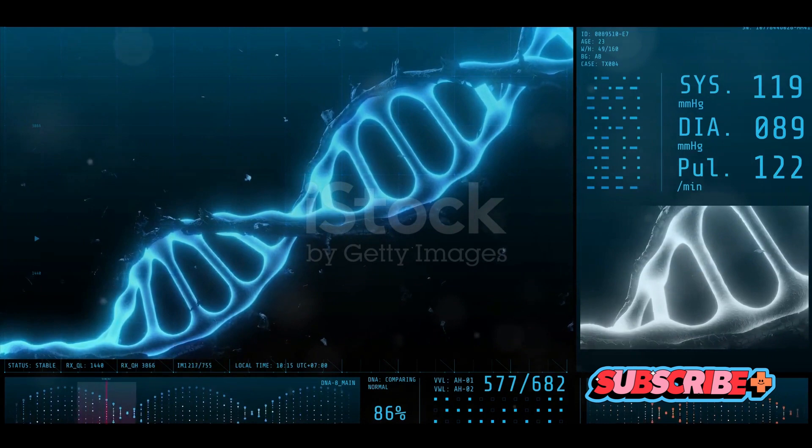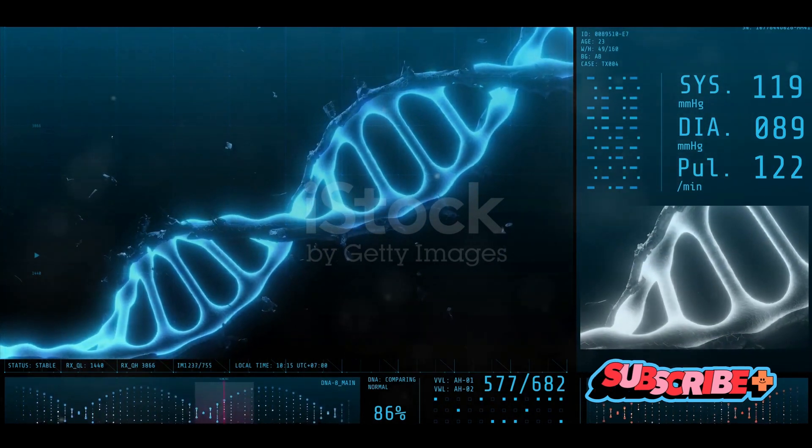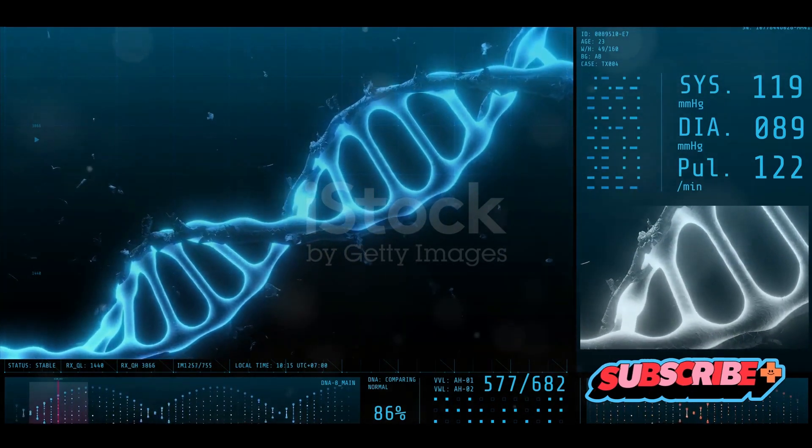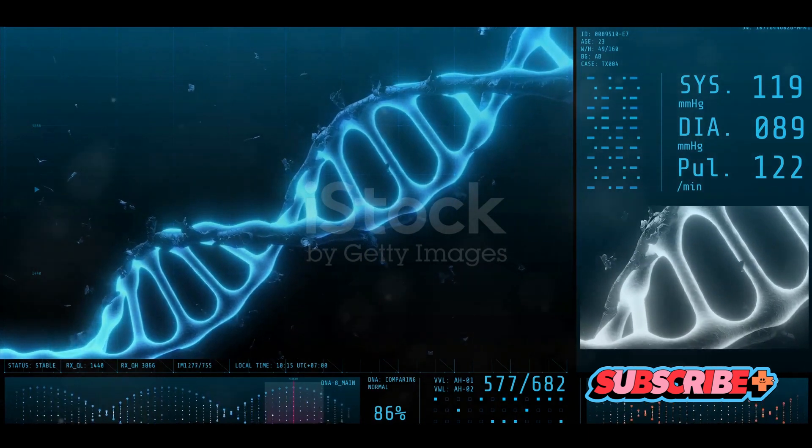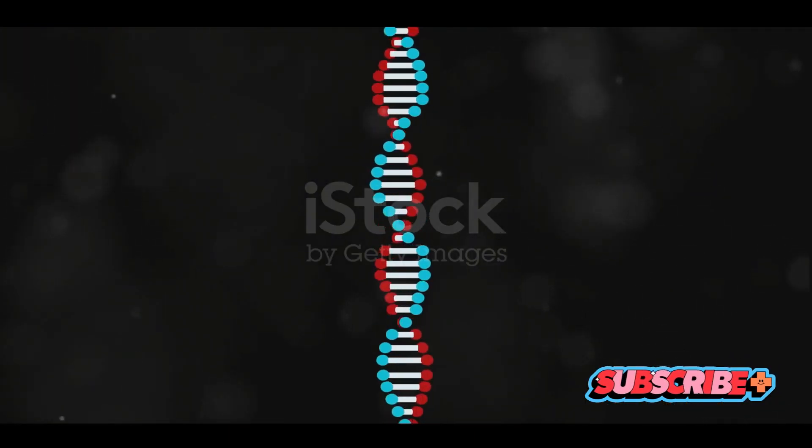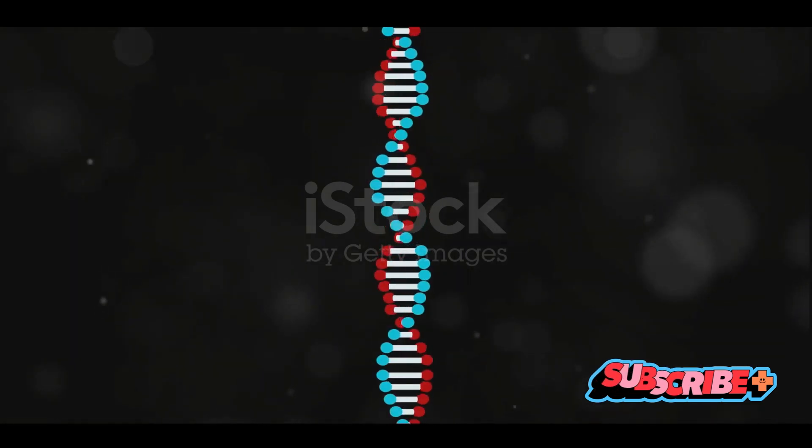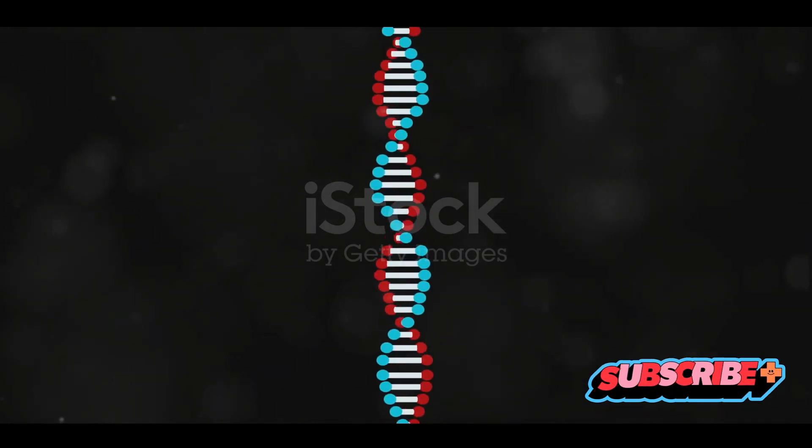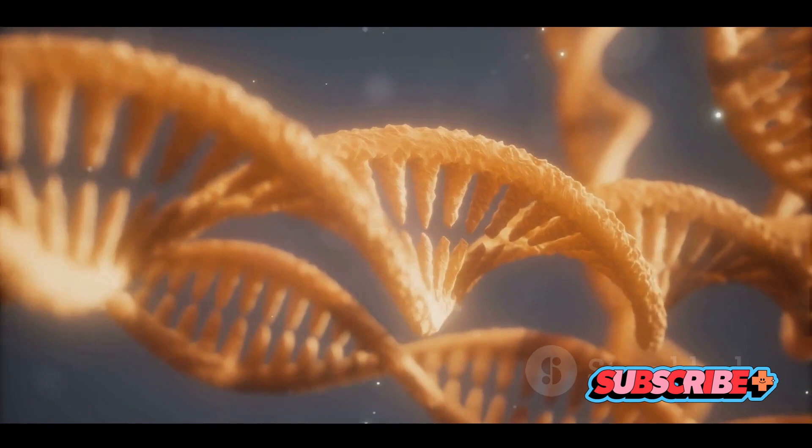Now imagine you have a zipper. Unzipping it gives you two separate strands, right? That's precisely what happens during DNA replication. The double helix unzips and each strand serves as a template for a new strand. And here's where base pairing comes in again.